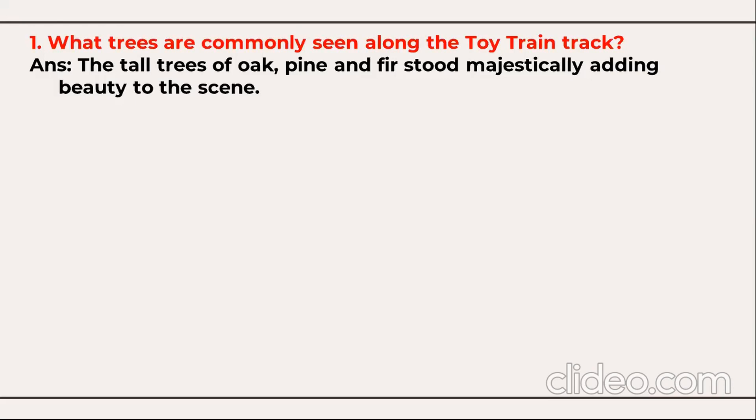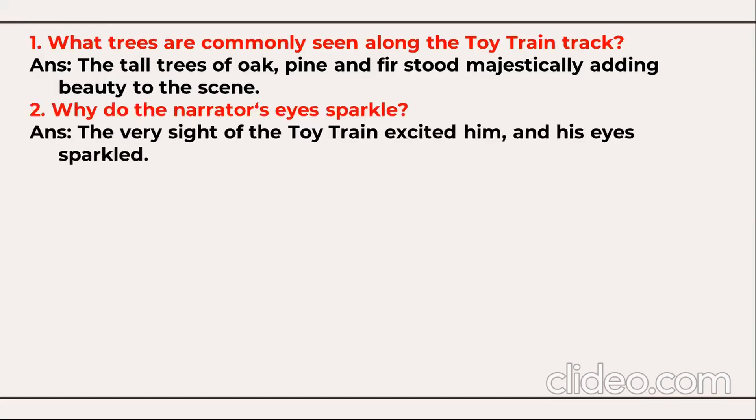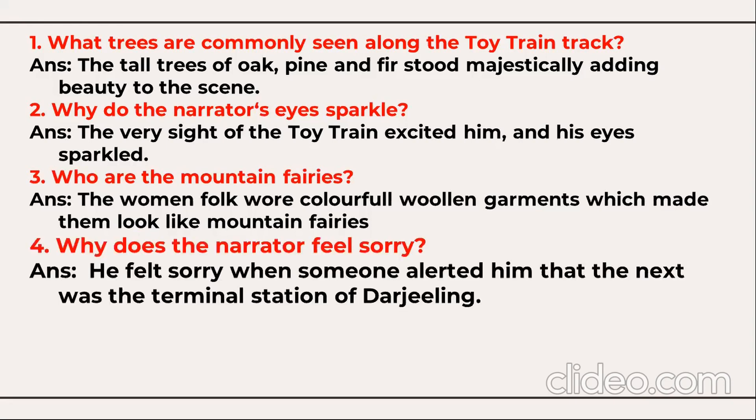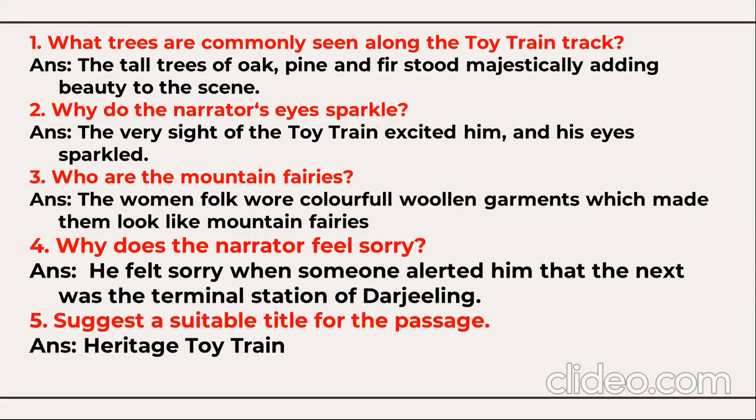For example: What trees are commonly seen along the toy train track? The tall trees — oak, pine and fir — stood majestically adding beauty to the scene. Why do the narrator's eyes sparkle? The very sight of the toy train excited him and his eyes sparkled. Who are the mountain fairies? The women folk wore colorful woolen garments which made them look like mountain fairies. Why does the narrator feel sorry? He felt sorry because someone alerted him that the next was the terminal station of Darjeeling. Suggest a suitable title: Heritage Toy Train.